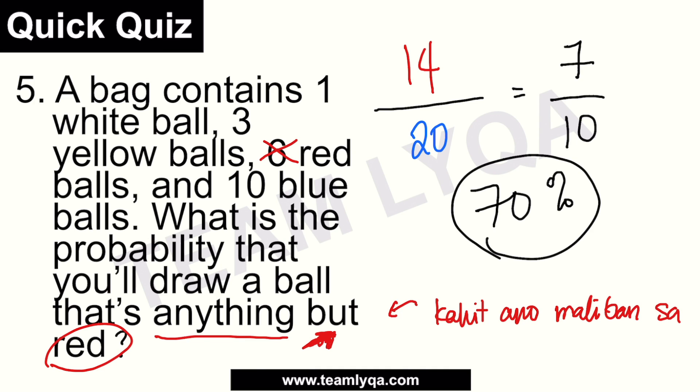So it's all about understanding what the question is asking. Then fit it into our formula: desired outcomes over total possible outcomes. This is a good refresher. We actually have a full series on probability covering coins, cards, and more. If you haven't watched those yet, the links are in the description below and the i-button above if you're watching on YouTube.